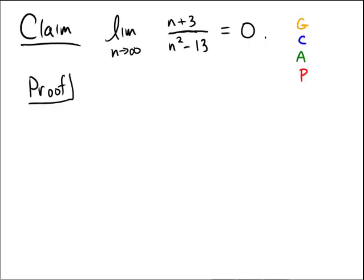And we're going to follow the typical epsilon-N proof here, which I like to call putting on the G-CAP. And so it has four steps to it: Given, Choose, Assume, and Prove.